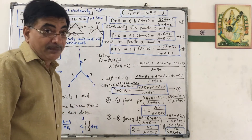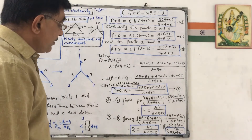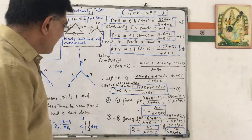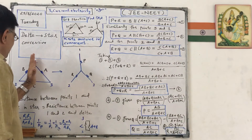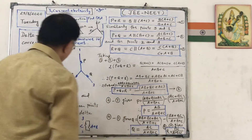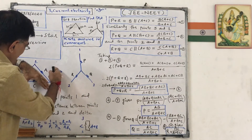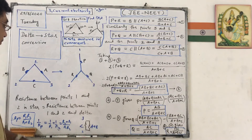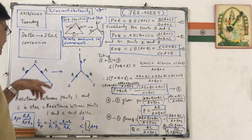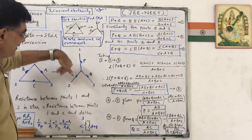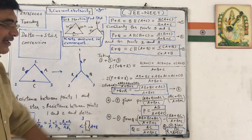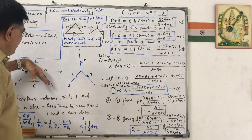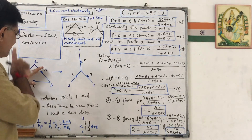How to remember: you have to prepare only the three equations for P, Q and R. For P, it is AB upon (A plus B plus C). For Q, it is AC upon (A plus B plus C). For R, it is BC upon (A plus B plus C). But you have to name the resistances in order — ABC anti-clockwise in the delta, PQR clockwise in the star — then only you can apply this method.